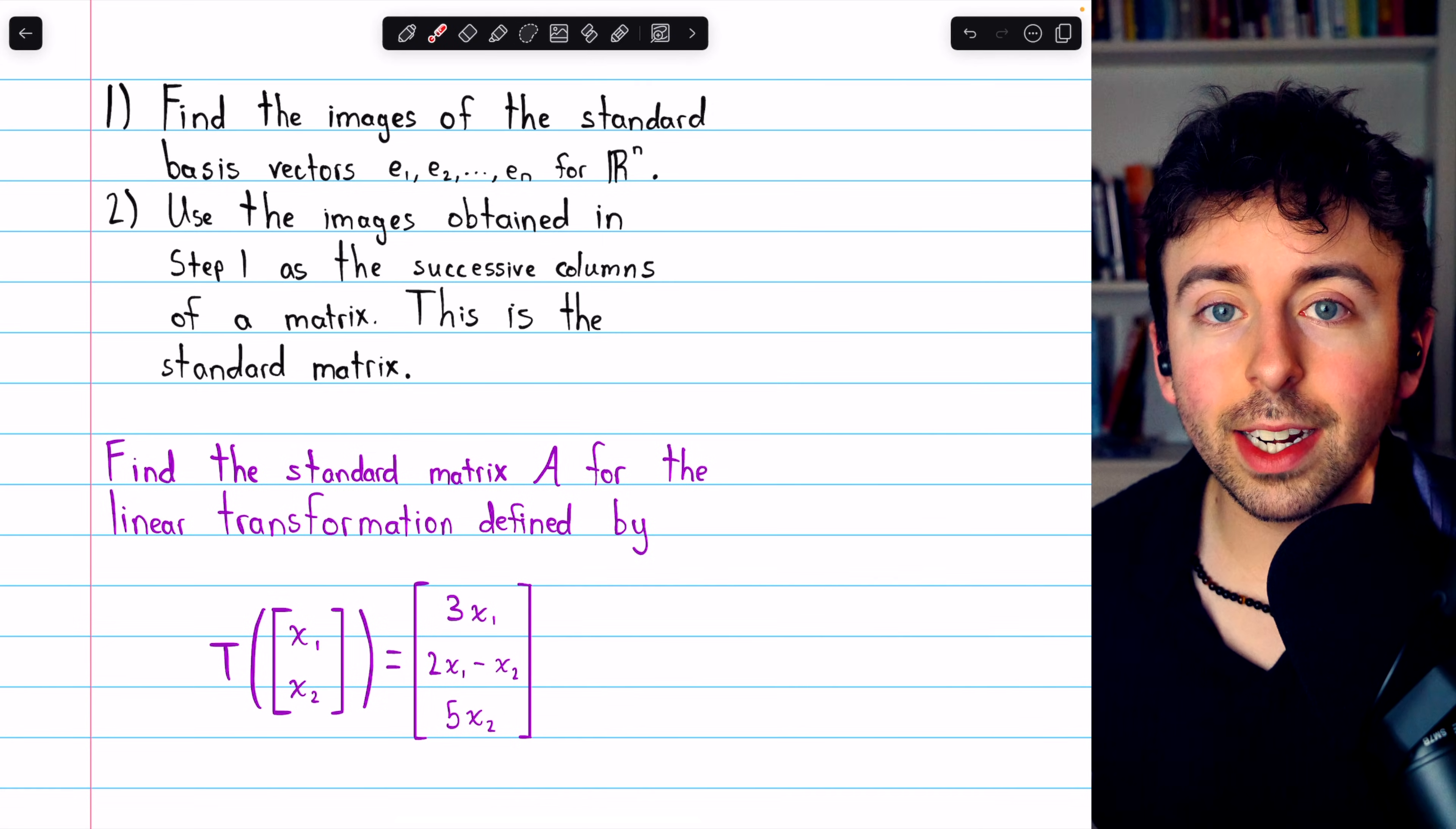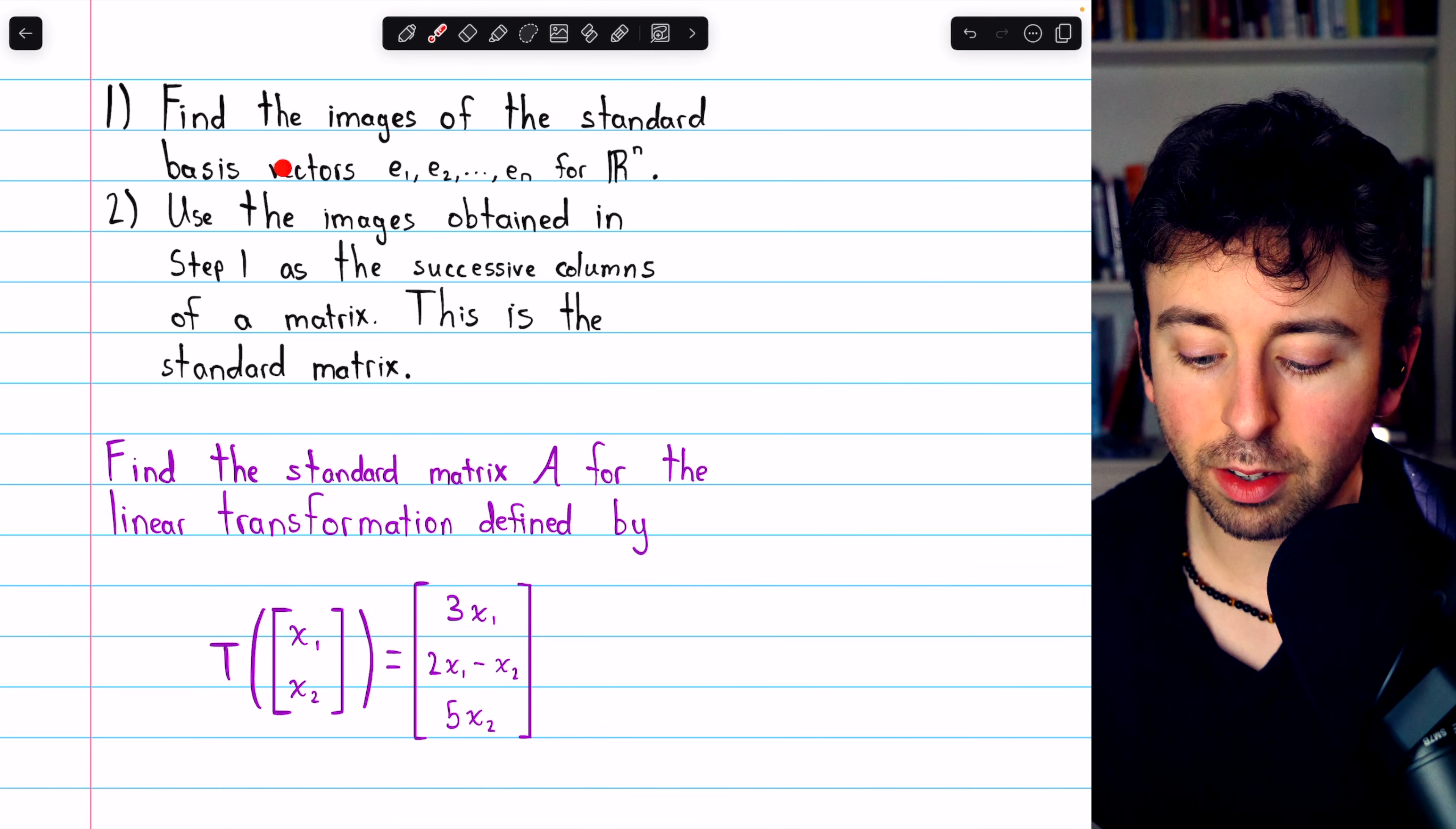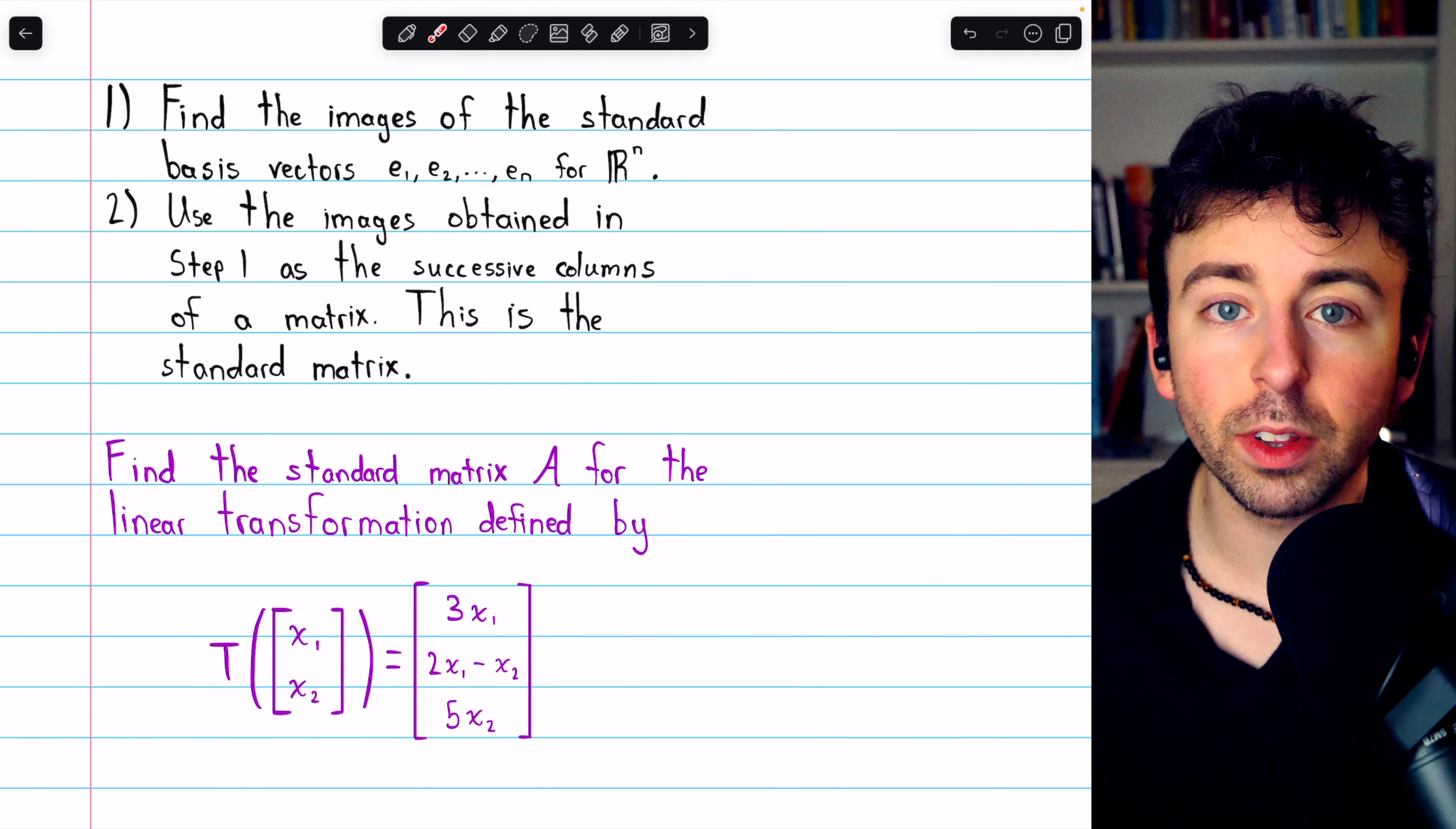Let's go over three examples of finding the standard matrix for a given linear transformation. This is a two-step process, although with practice it can be done very quickly. The first step is to find the images of the standard basis vectors for R^n, whatever the domain of the transformation is. Once we have those images, we just use those as the successive columns of a new matrix, and that's the standard matrix for the transformation.